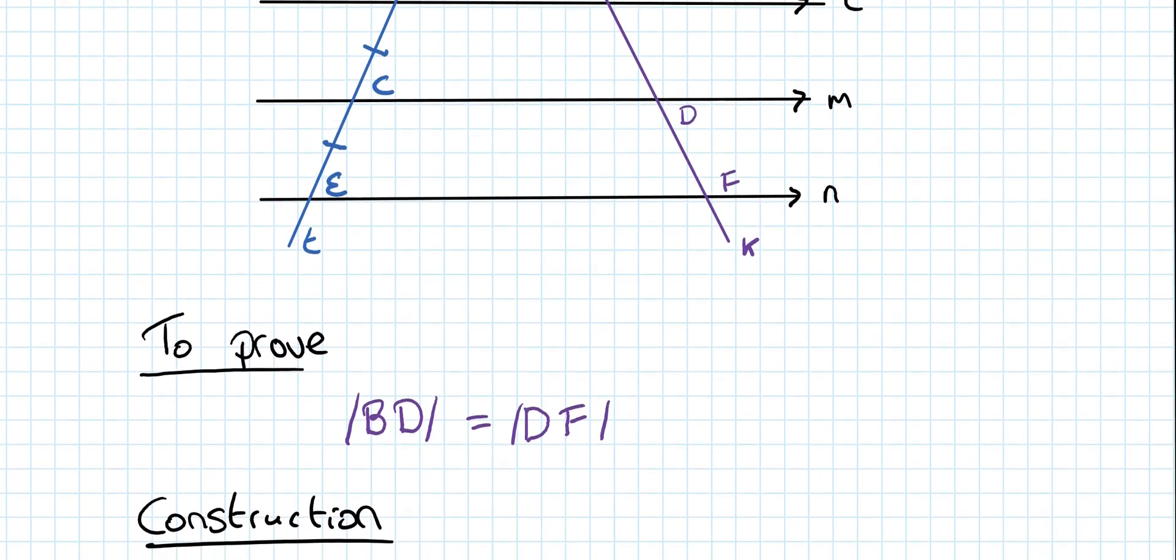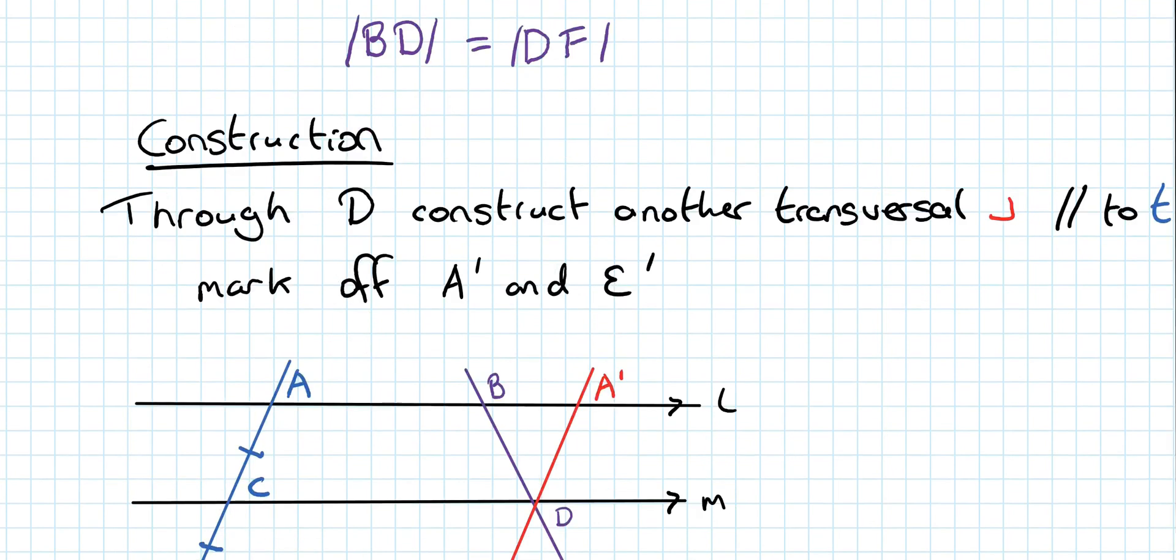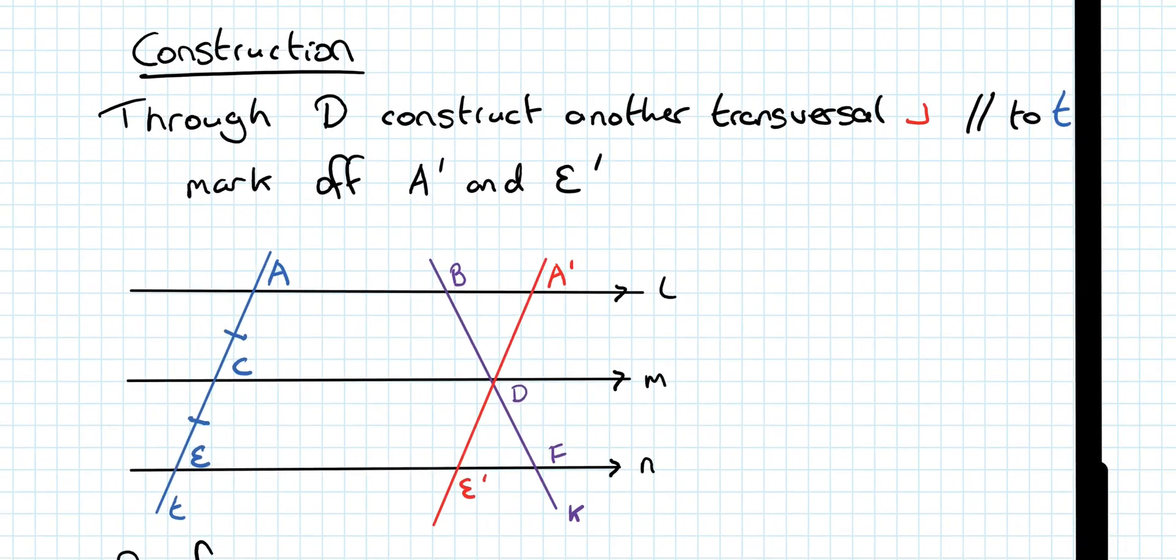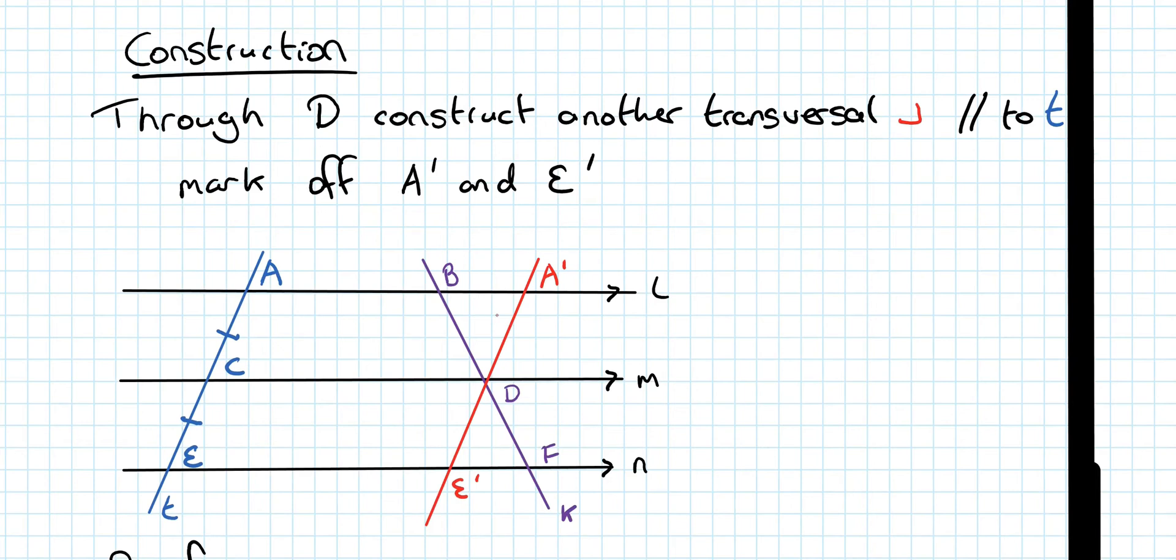Now, our construction, what we would draw in on the diagram of what we'd be given. You would construct a line that is parallel to T. So, through this midpoint here, construct a line that is parallel to the transversal T. So, through D, construct another transversal J, that is parallel to T. So, J is parallel to T, and mark off A prime and E prime. A prime is just where it would be. So, A is here, A prime is over here, E and E prime, although you can call them anything you want.